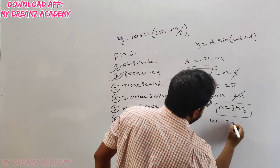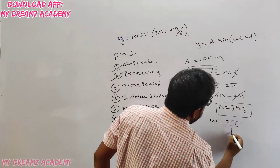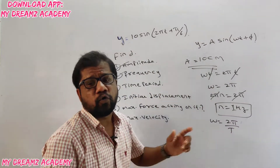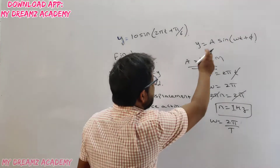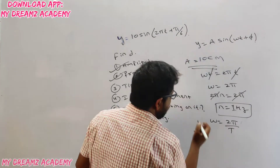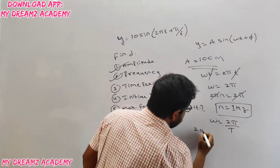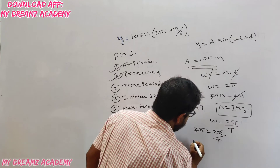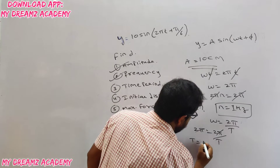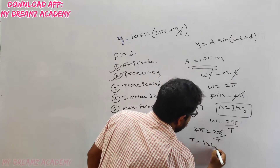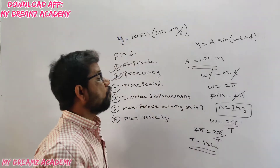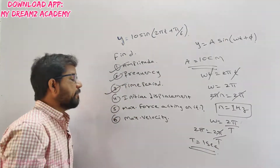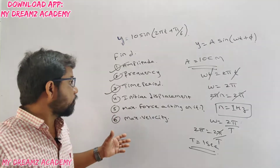For time period, use the relation ω = 2π/T. We know ω = 2π, so 2π = 2π/T. The 2π cancels on both sides, giving T = 1 second. Time period is 1 second. We have now answered three of the six questions.